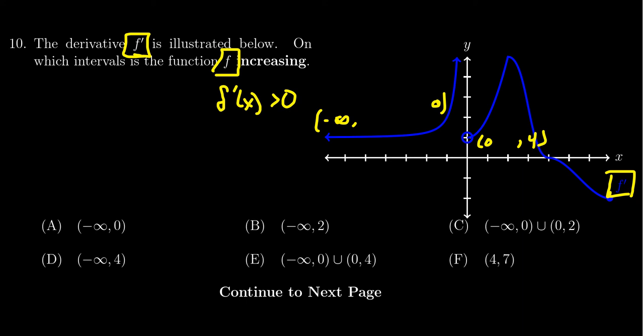And that's exactly where the function would then be increasing. Because when you go from 4 to 7, the derivative is negative, which means the function is actually decreasing right there. So the correct reply would be E.